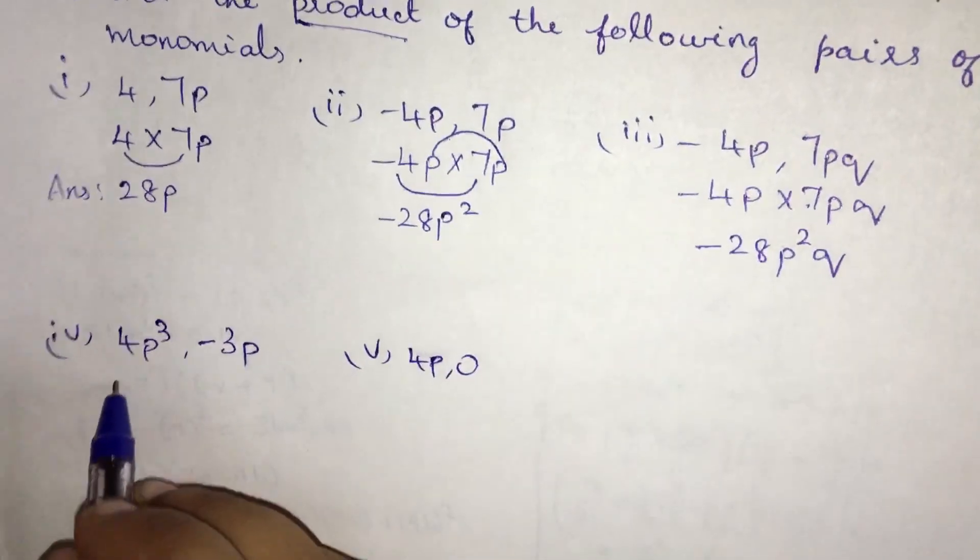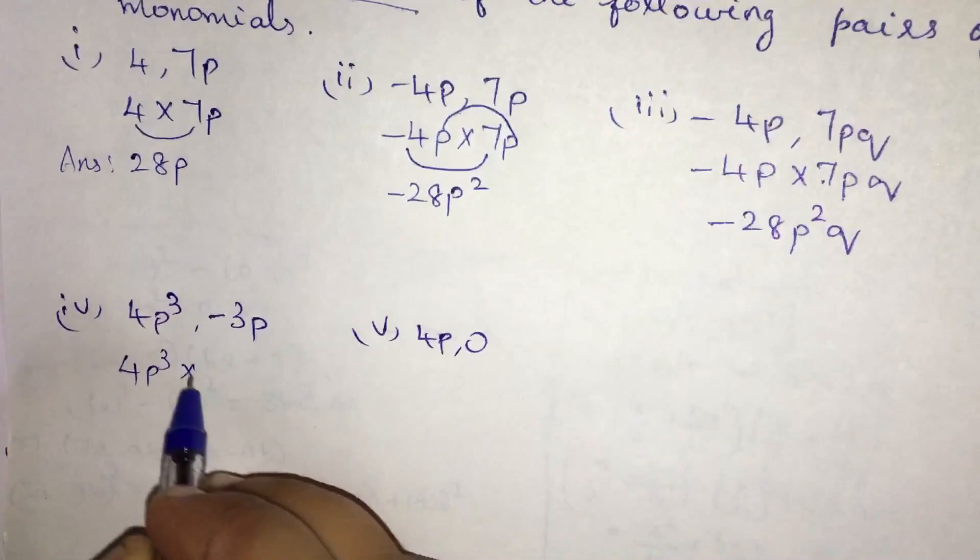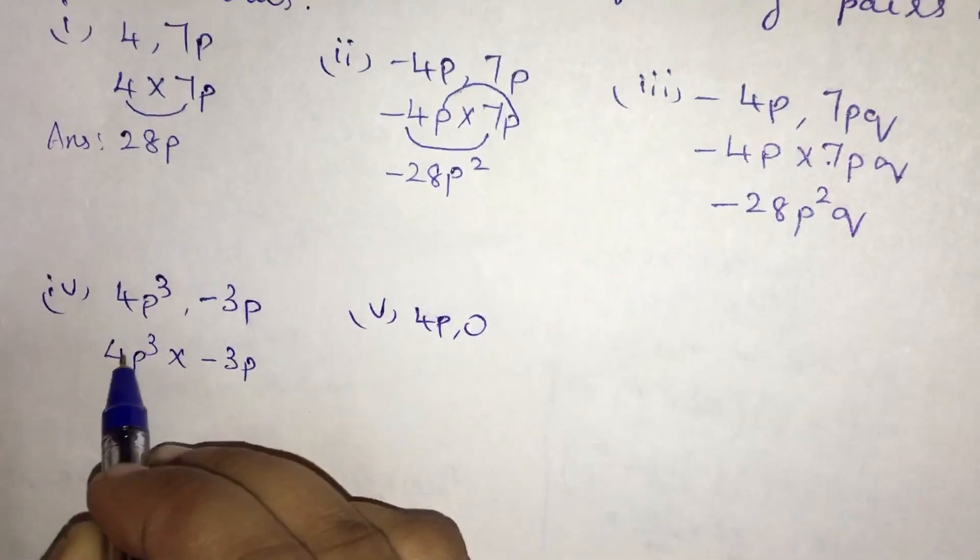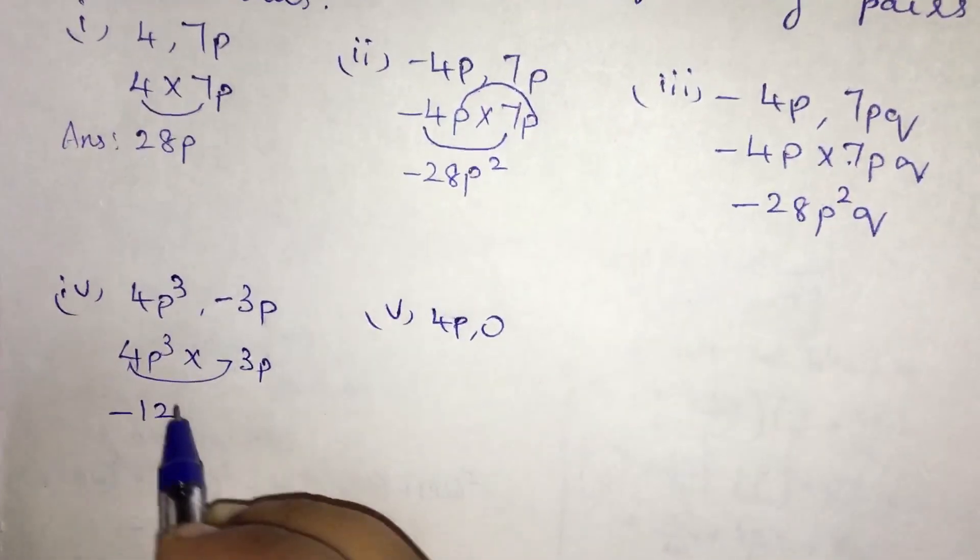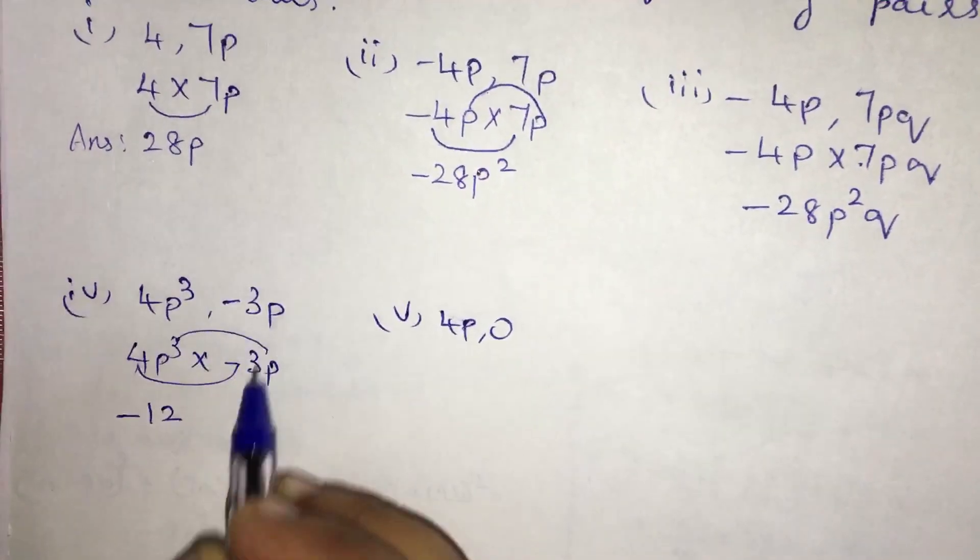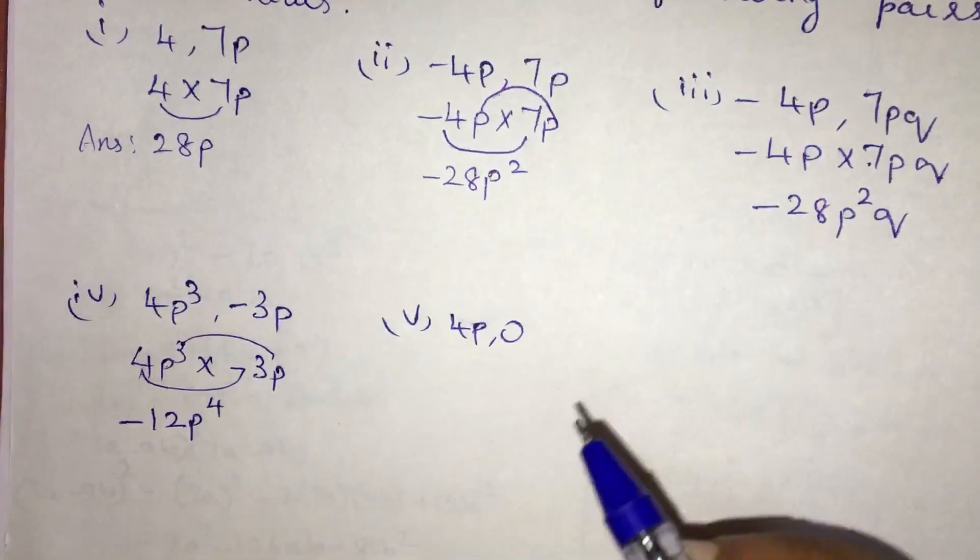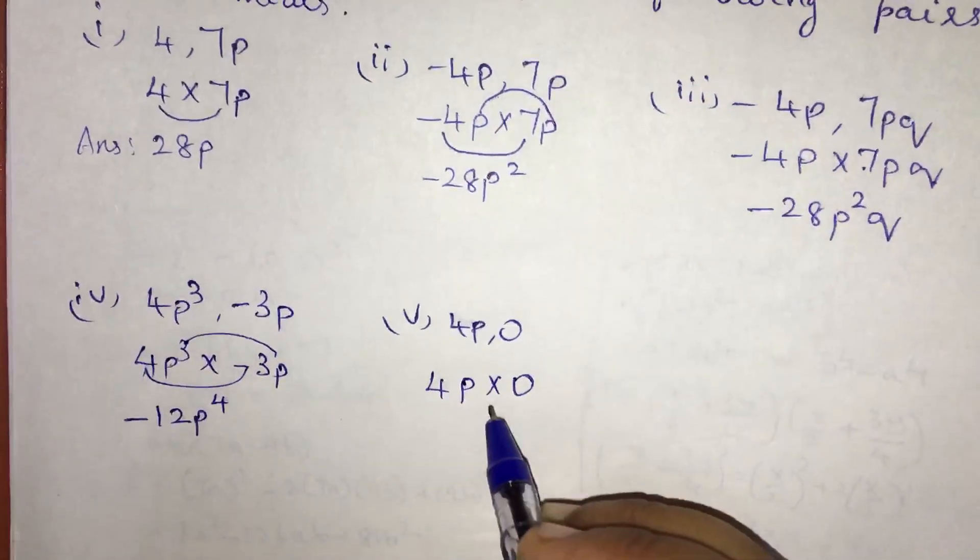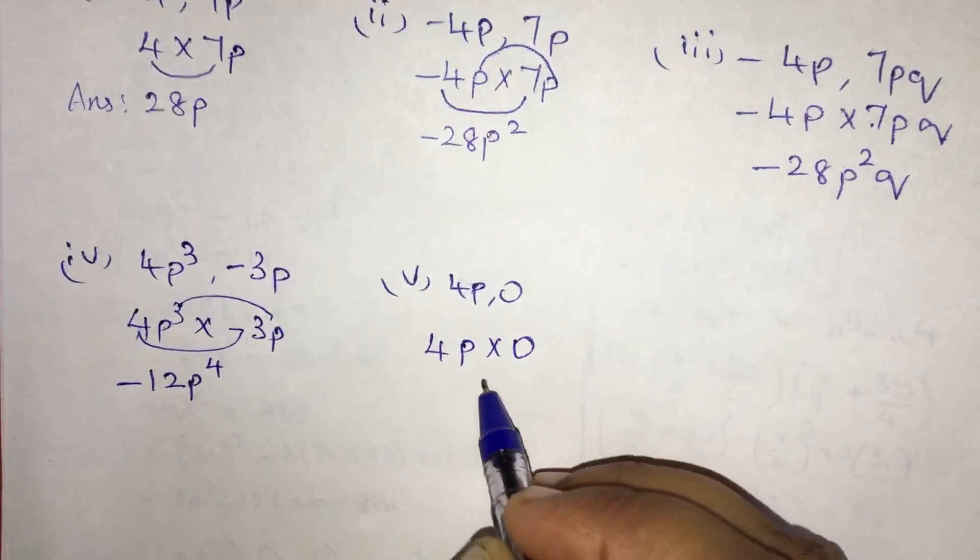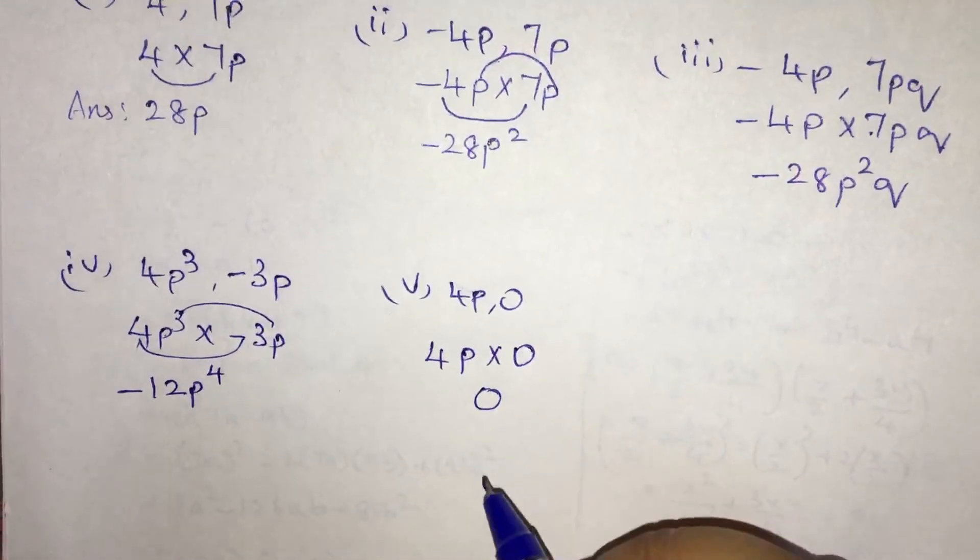Next sum: 4p cube into minus 3p. 4 into minus 3 is minus 12. p cube into p is p power 4. 4p into 0. As we know, anything multiplied by 0 is 0, so the answer is 0.